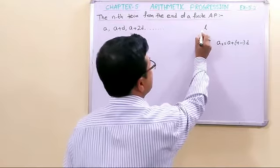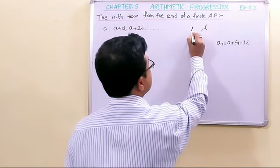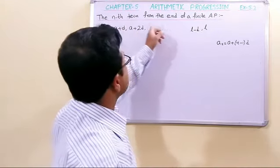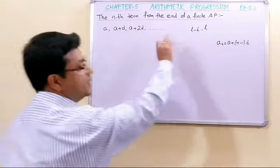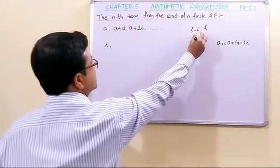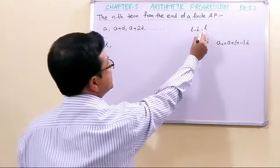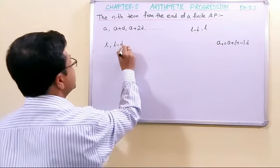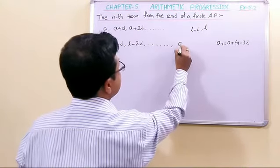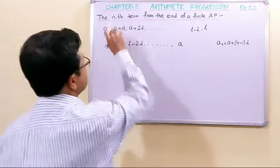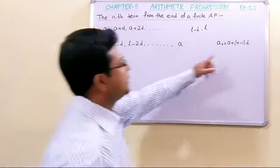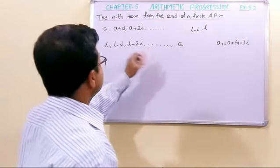If the last term is l, the preceding term is l minus d. Our aim today is to find the nth term from the end. If we write this AP in reverse order, the first term becomes l, and we will apply the standard formula to find the particular nth term.